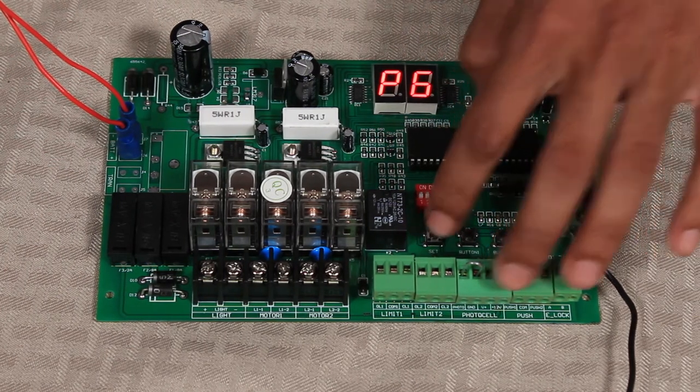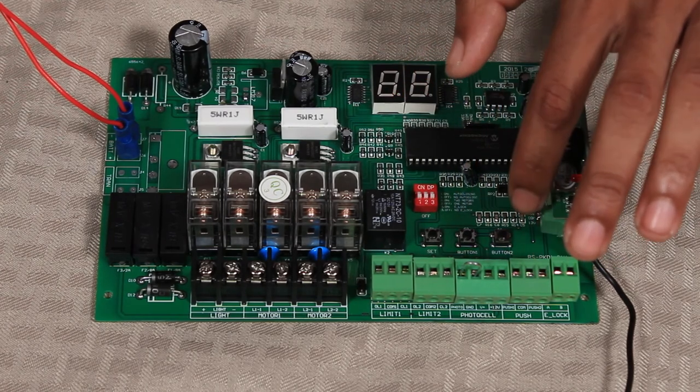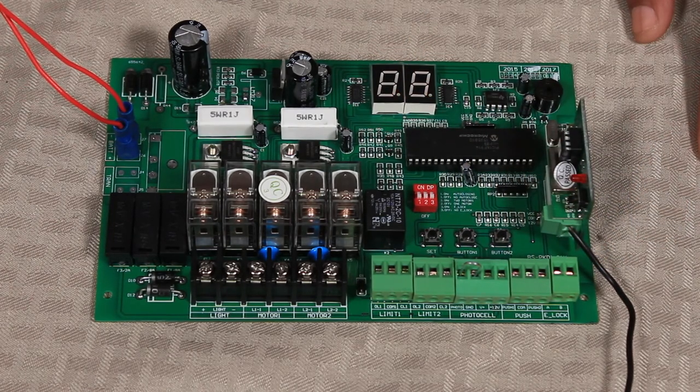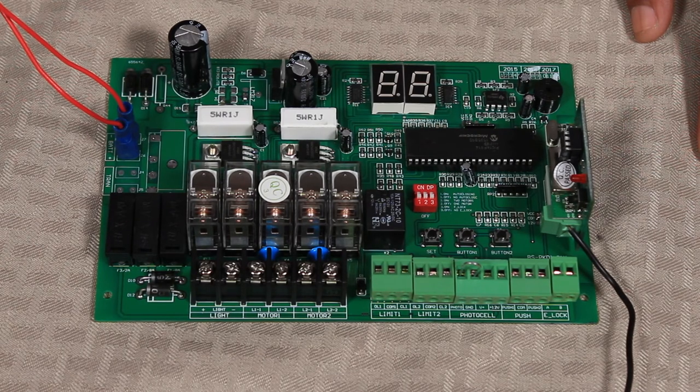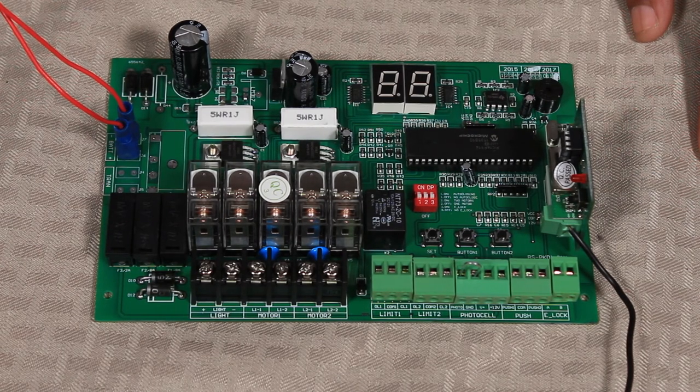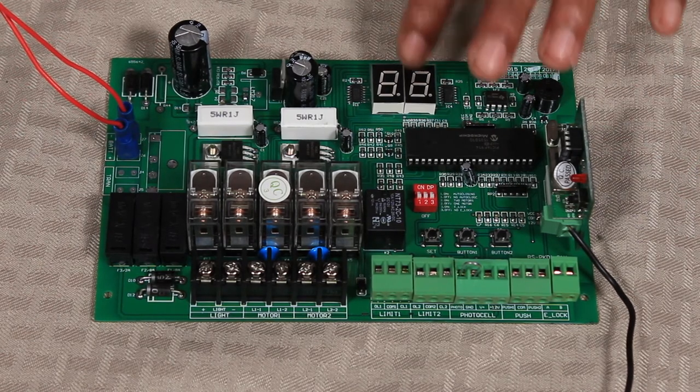All right. So I'm just going to clear the display and explain one more thing here. Button one and button two can both be used to open or close the gate. Button one will open the gate and close the gate. Button two will only open the gate. And this will only happen when the display is blank.